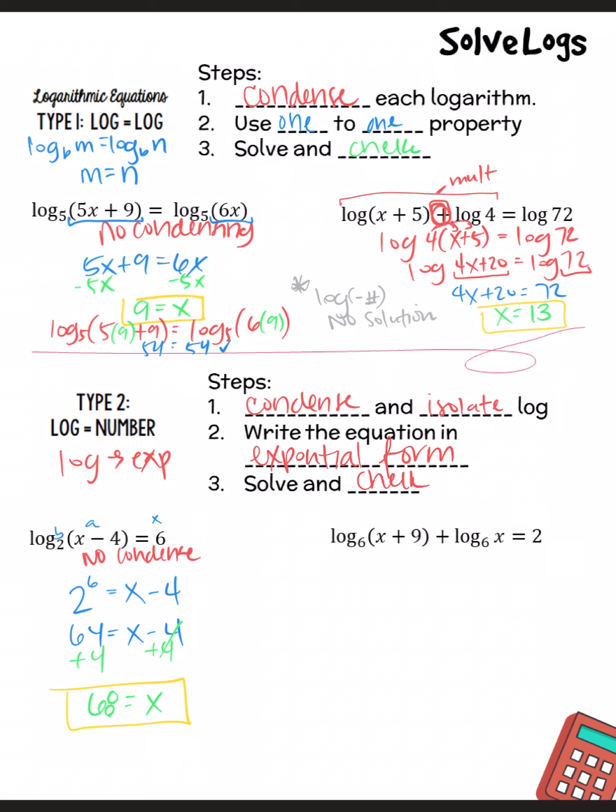The second example, we are going to condense. Again, we've got an addition, so we're going to have log base 6 of X plus 9 times X, and that's going to equal 2, so I need to distribute again. So we're going to have log base 6 of X squared plus 9X equaling my 2. I'm going to always label B, this whole thing is A, and this is X.